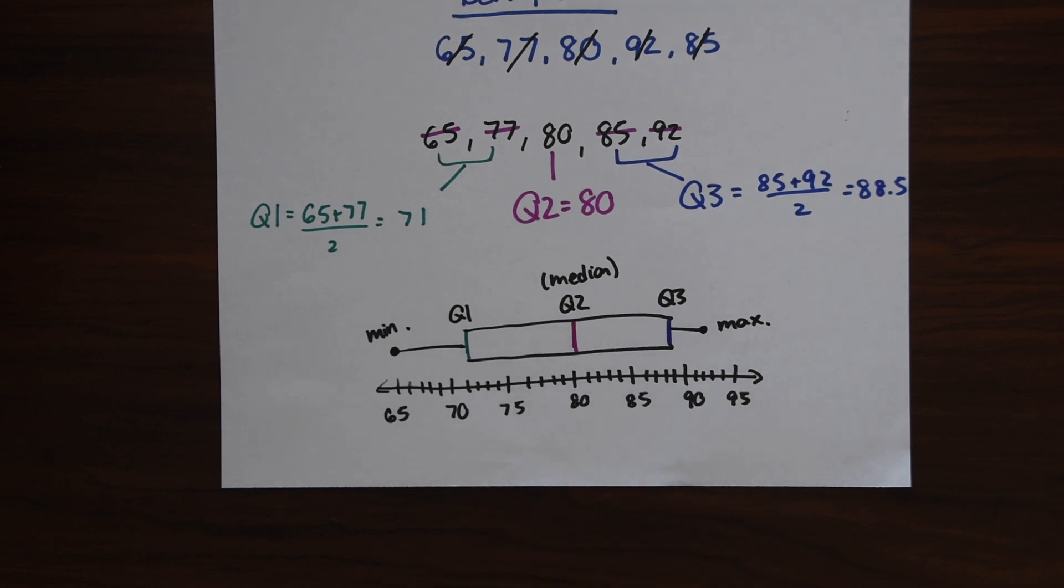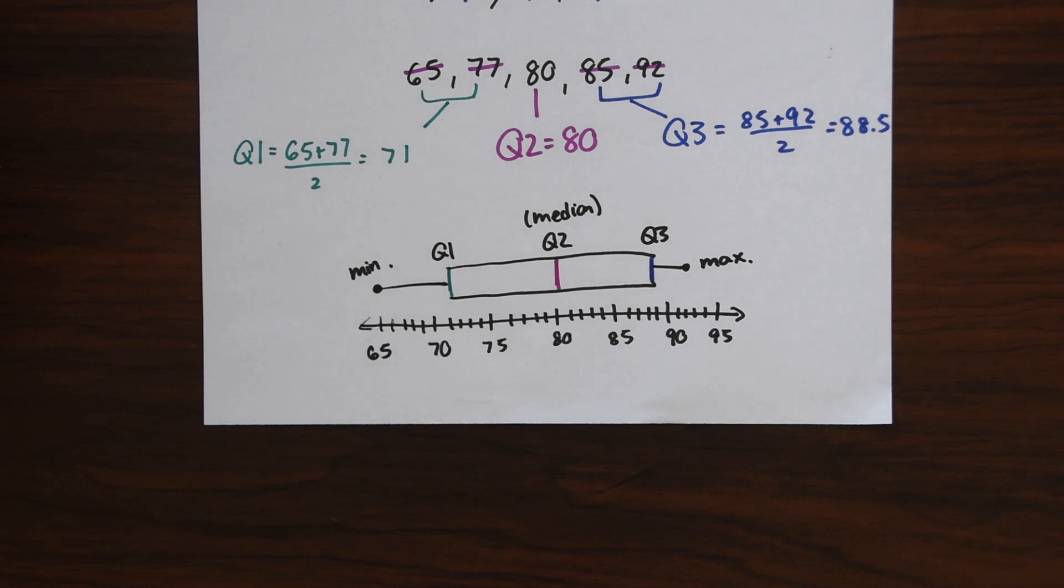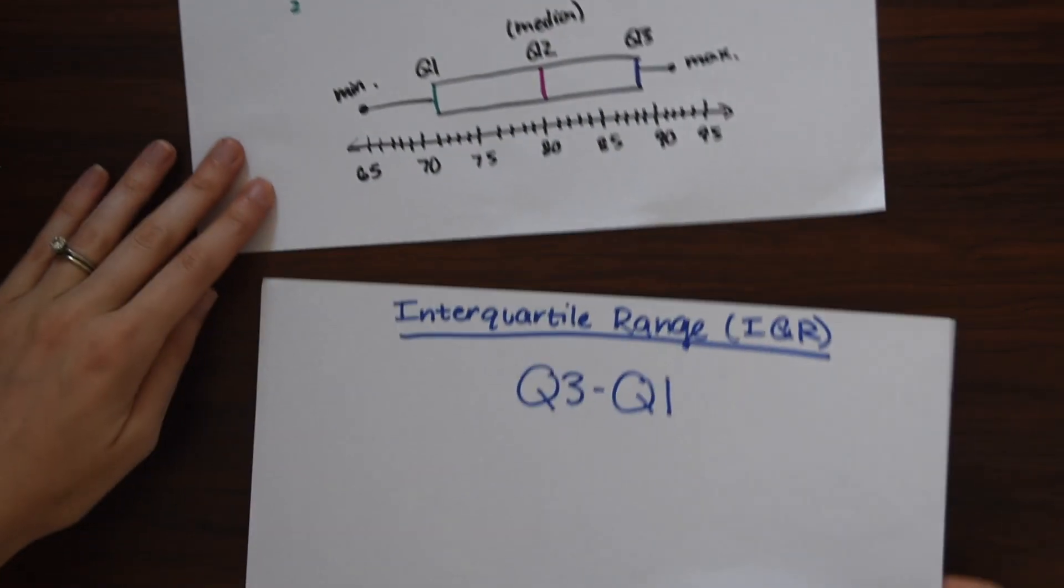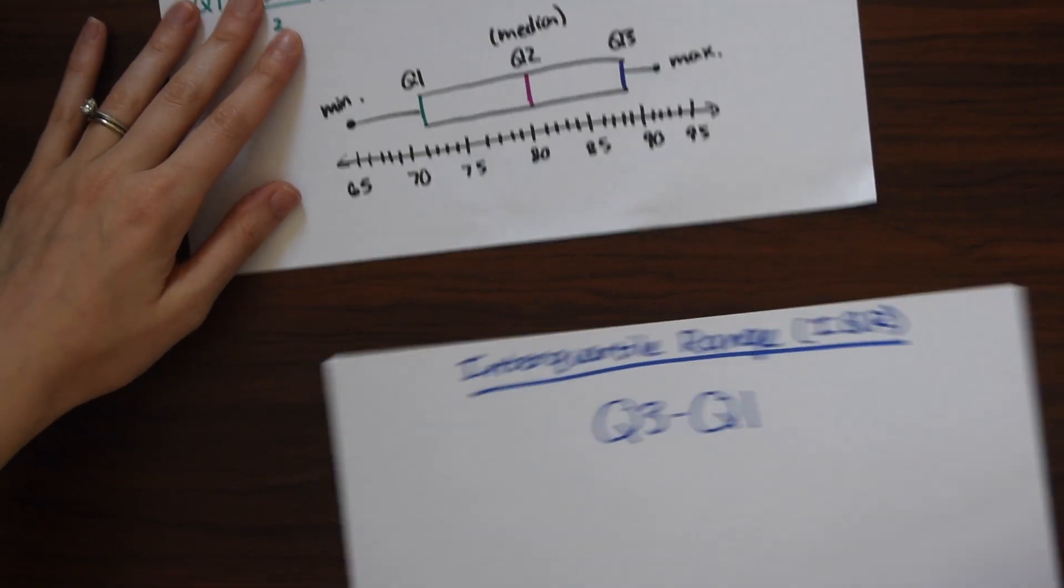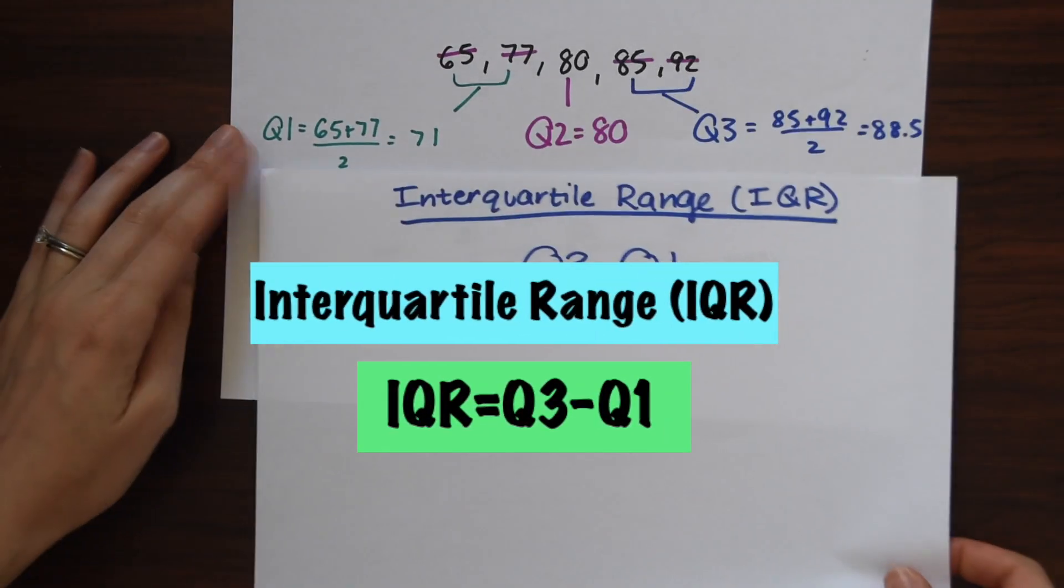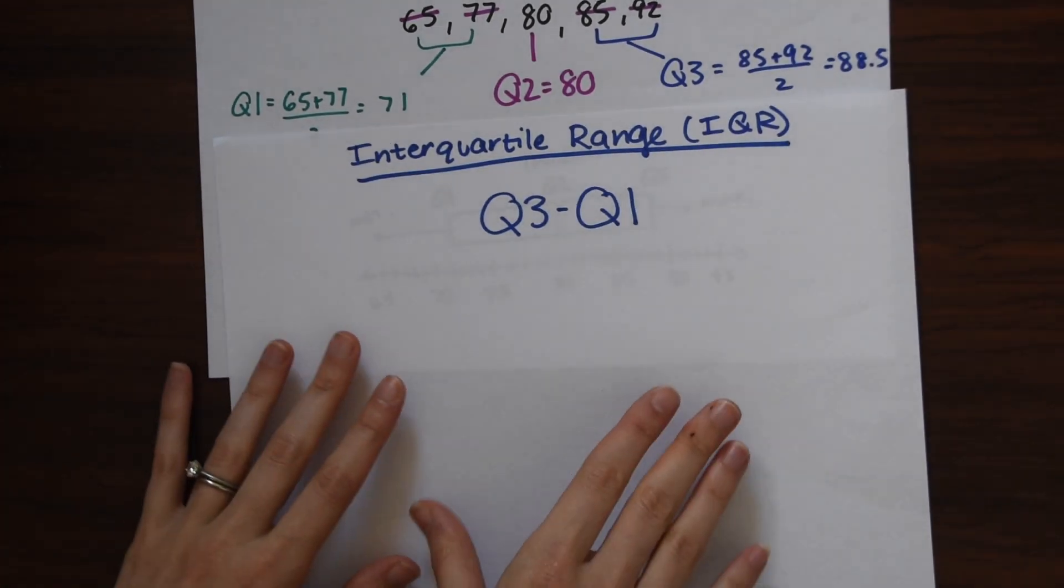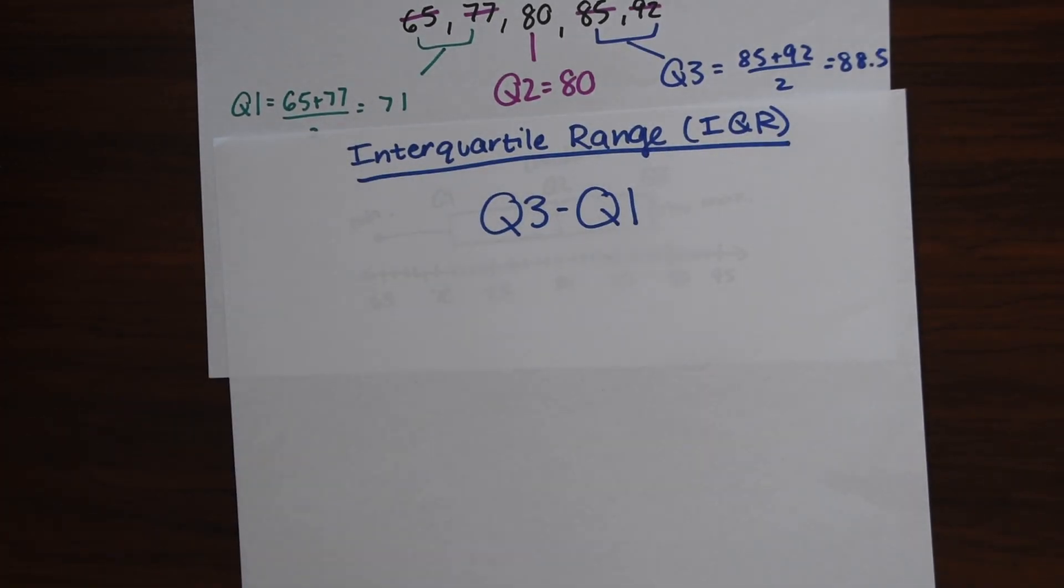So now we're going to start analyzing our box plot and seeing what the data can tell, what this box plot can actually tell us about the data. So the interquartile range is one way we do that. So the interquartile range is just quartile 3 minus quartile 1.